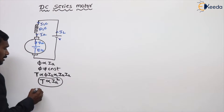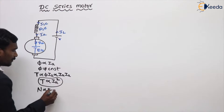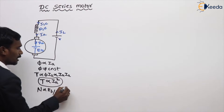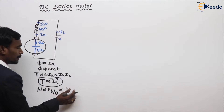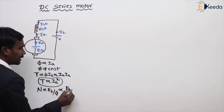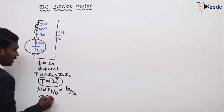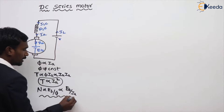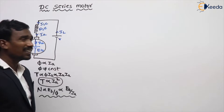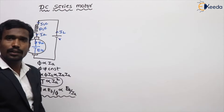Speed is directly proportional to EB divided by φ. But since φ is proportional to IA, speed is directly proportional to EB divided by IA. This covers the speed and torque relationships of the DC series motor.